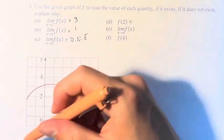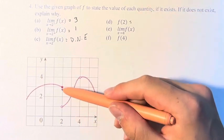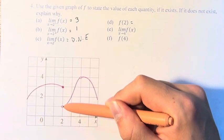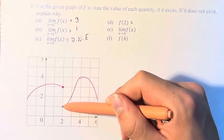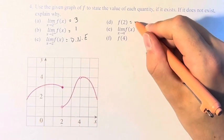f of 2 has nothing to do with the limit, but is the value of the function at that point, which, if we look here, is the solid closed-in point, as opposed to the open circle, which just means it approaches it but doesn't actually hit it. So that means the value of f at 2 is this point right here, which has a y value of 3.